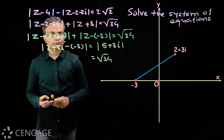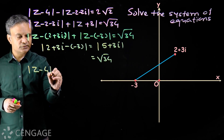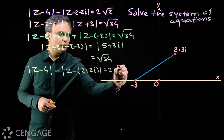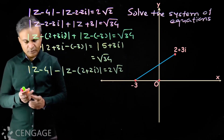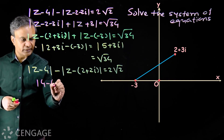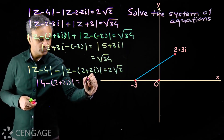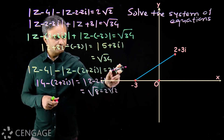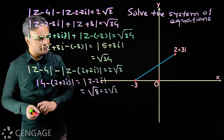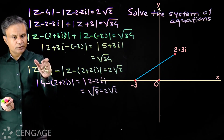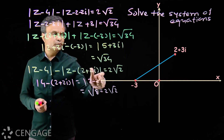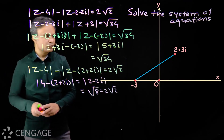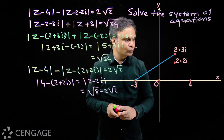Now consider the second equation. We have the distance between z and 4, minus the distance between z and 2 plus 2i, equal to 2 root 2. The distance between complex numbers 4 and 2 plus 2i is the modulus of 2 minus 2i, which equals root 8, that is 2 root 2. So the right-hand side equals the distance between these two complex numbers.